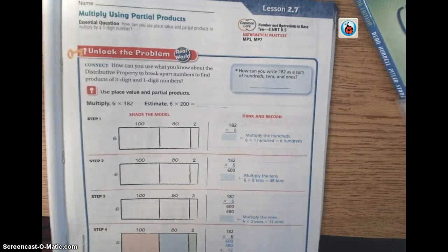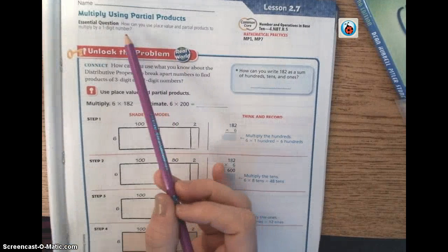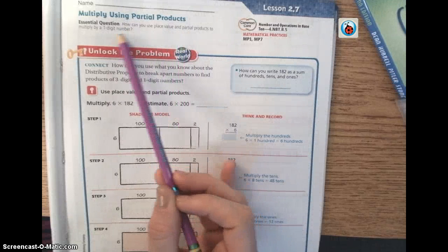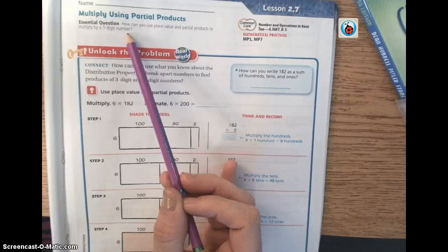Welcome to your 2.7 screencast. You can see up at the top of the screen that the essential question is, how can you use place value and partial products to multiply a 2 by 1 digit number?